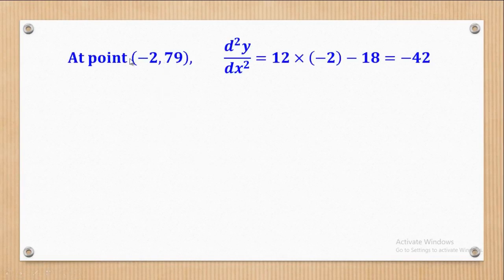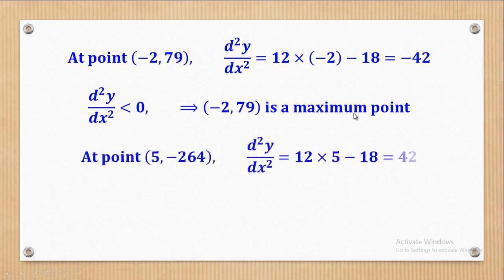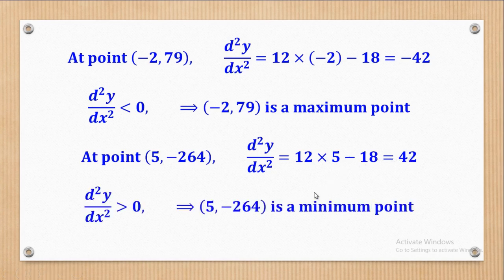Substituting x = −2 into the second derivative gives −42. Since −42 < 0, this point is a maximum point. Substituting x = 5 gives 42. Since 42 > 0, this point is a minimum point.